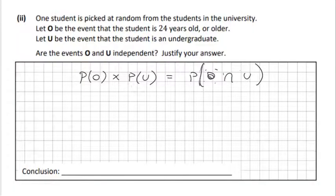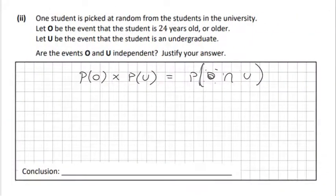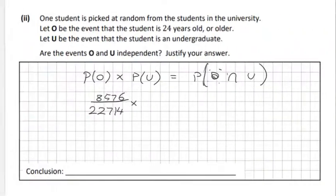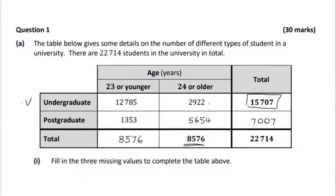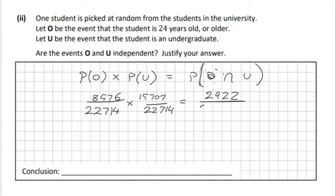So let's look at the actual values. The probability of O is the total down here of 8,576 over 22,714. And the probability of U is 15,707. And that is equal to the probability of the intersection. So let's look at the intersection. This is where the U and the O sets intersect across here and down. And we will get 2,922 over the total again.